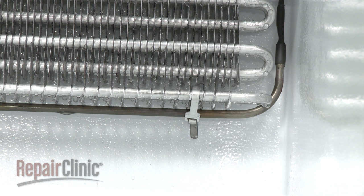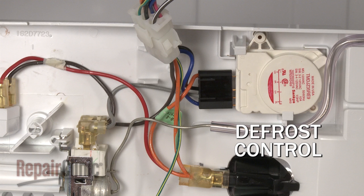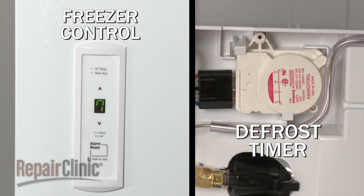The basic components in an automatic defrost system are the defrost heater, the defrost thermostat, and the defrost control. Depending on the model, the control may be part of the freezer control board or it may be a defrost timer.